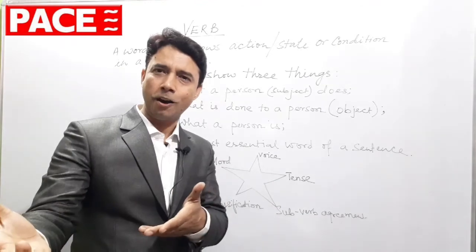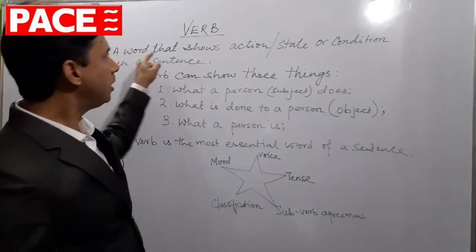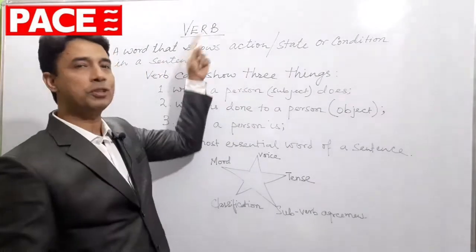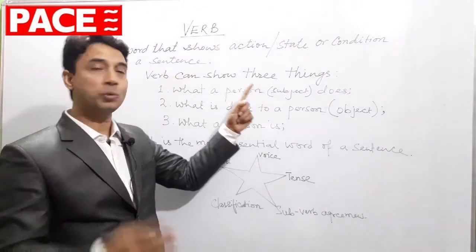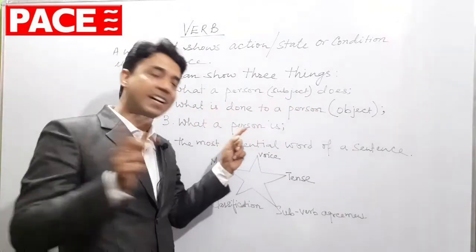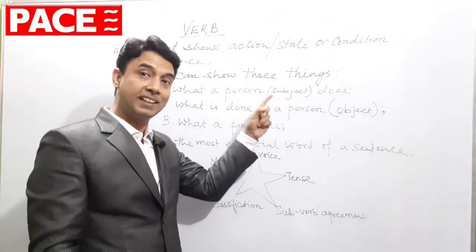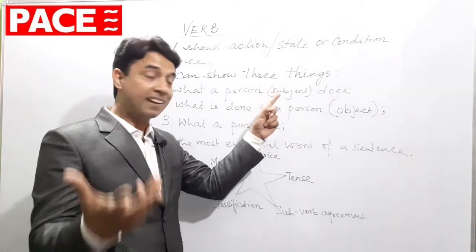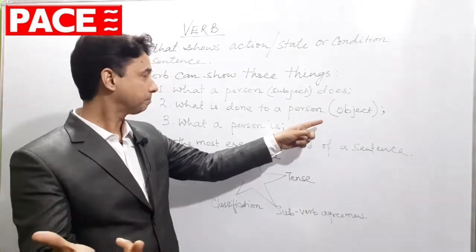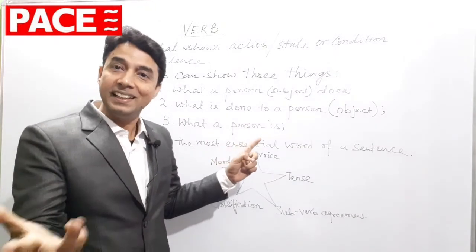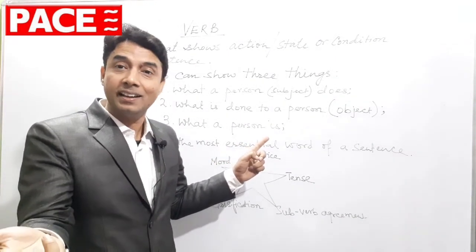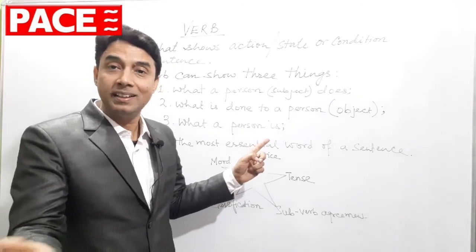Just a recap: a word that shows action, state or condition in a sentence is a verb. Verb can show three things — what a person does, what is done to a person, and what a person is. For linking, for example, 'He is smart' — here 'is' links and is a linking verb. A verb is the most essential word in a sentence and without a verb you cannot even think of making a sentence.